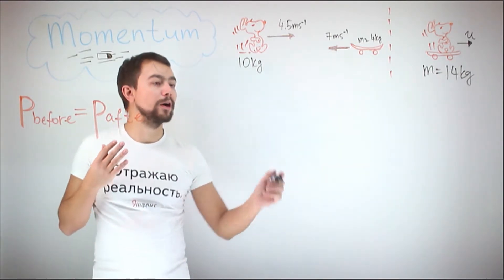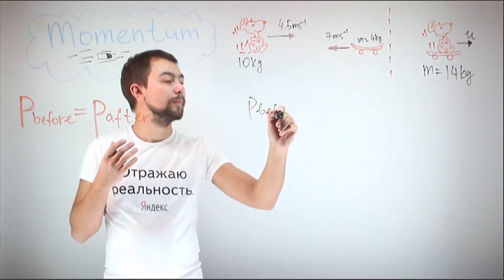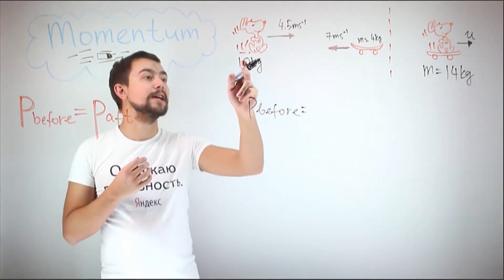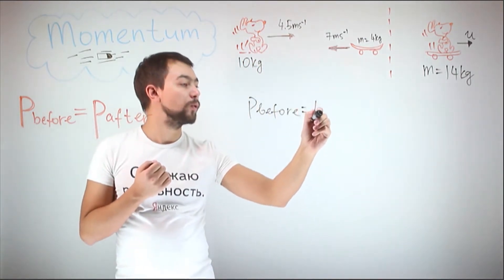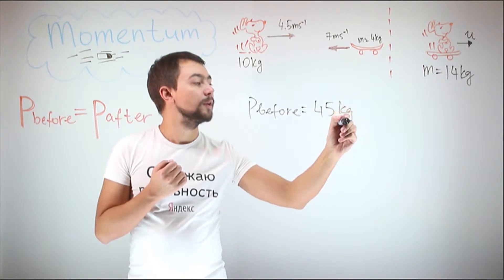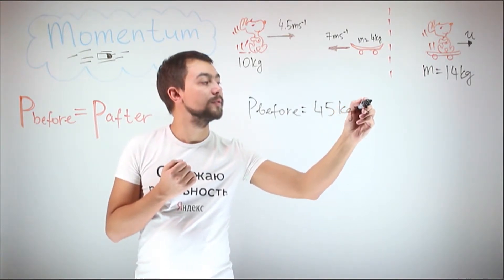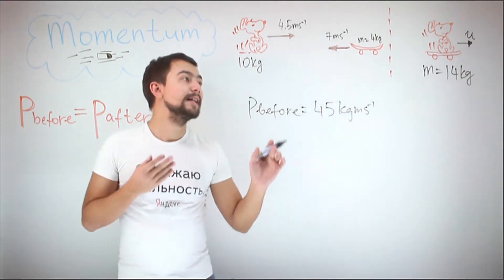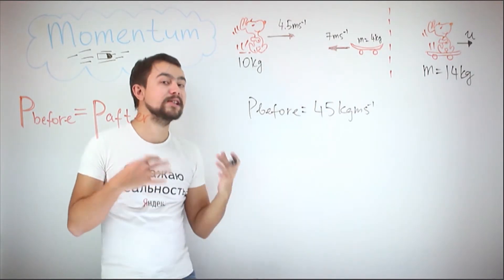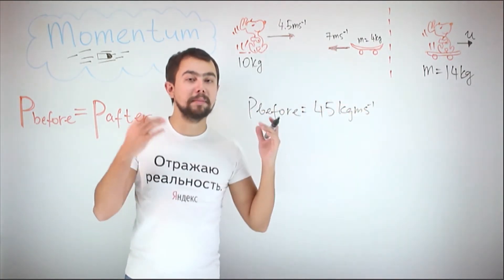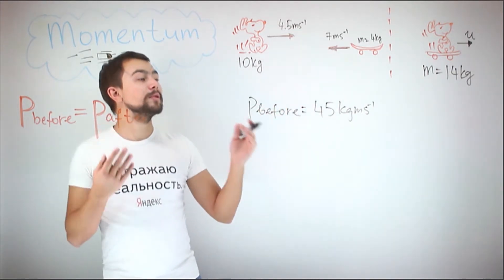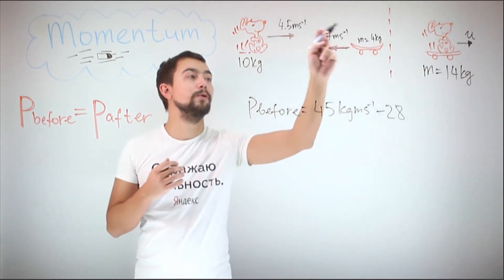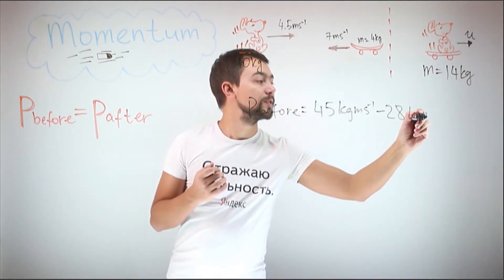Momentum before is equal to mass of Snoopy times his velocity is 10 times 4.5 which is 45 kilogram meters per second. Now, this is the momentum of Snoopy. Now, we need the momentum of the skateboard. But since the skateboard is moving in the opposite direction and momentum is a vector, we must consider this by writing minus 28, which is 4 times 7, kilogram meters per second.